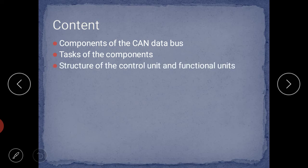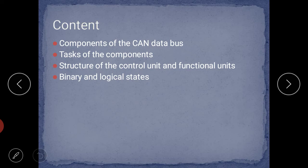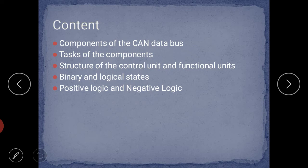Third one is the structure of the control unit and its functional units — what is the basic structure of the control unit we will see in detail. Fourth one is the binary and logical states — the different states in the logic system of a control unit. Fifth one is positive logic and negative logic, and last one is the data transmission process in this CAN data bus system.